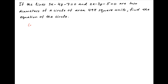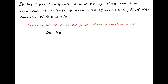We know that the diameters of a circle intersect at the center of the circle. We are given the equations of two lines which are the diameters of the desired circle. The first equation is 3x minus 4y is equal to 7, and the second equation is 2x minus 3y is equal to 5.